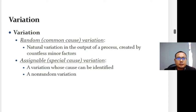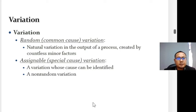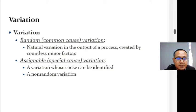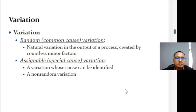Variation can be random variation — common cause variation related to countless minor factors inherent in the output of a process — or assignable variation, which is variation whose cause can be identified and is non-random.